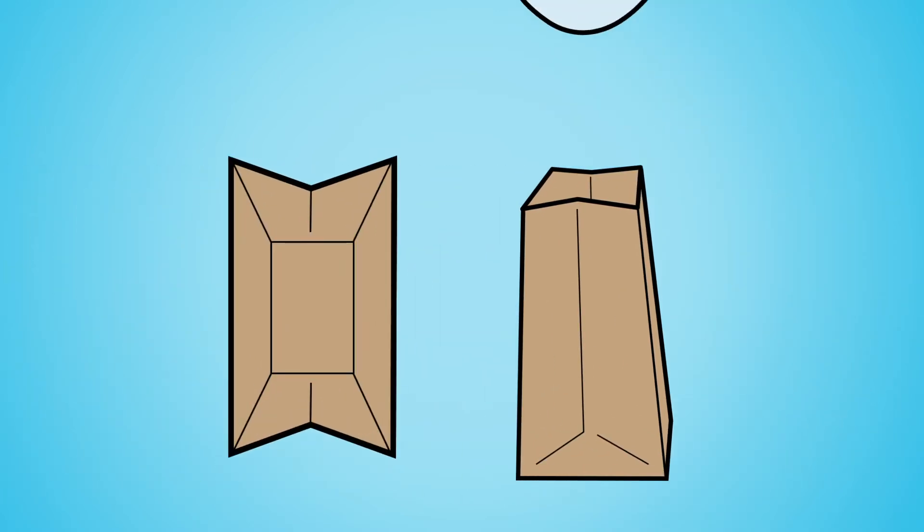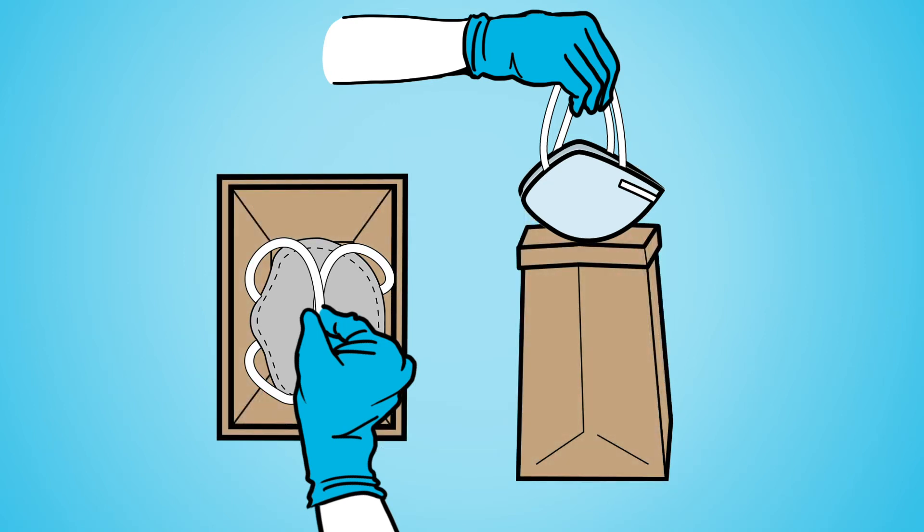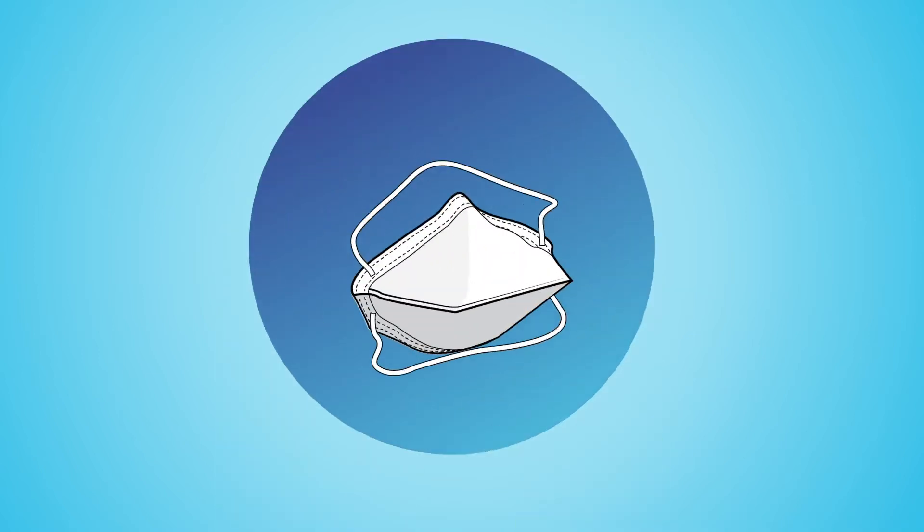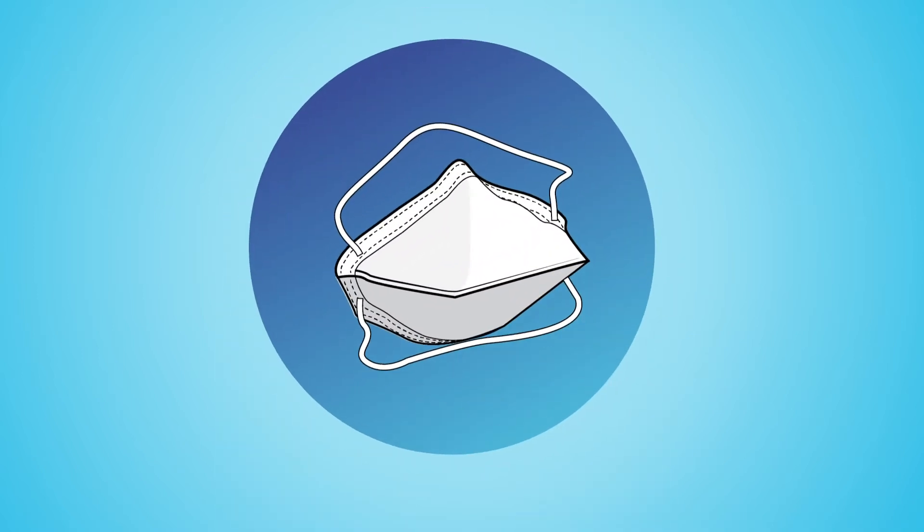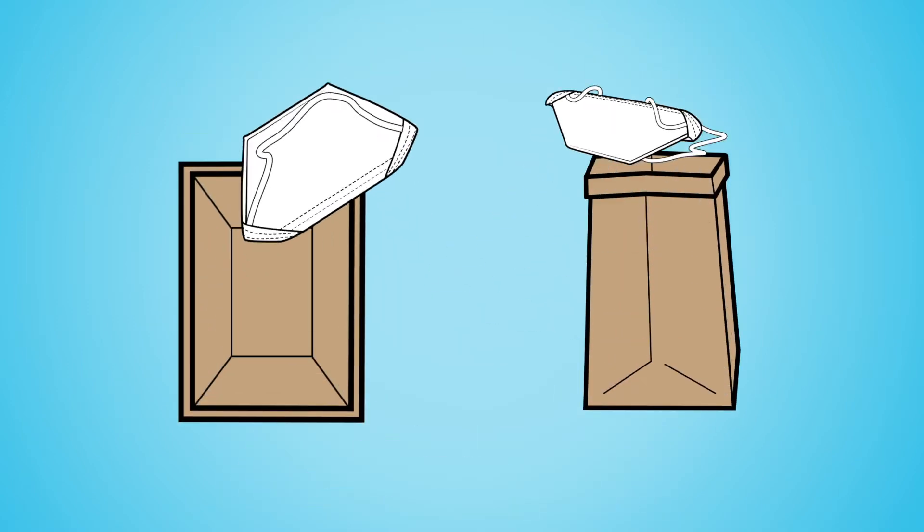You can store your respirator at the bottom of the bag and fold the opening over to make sure it stays open and is as big as possible. If you are using a duckbill respirator, fold it together so that it is flat and store it at the bottom of the bag.